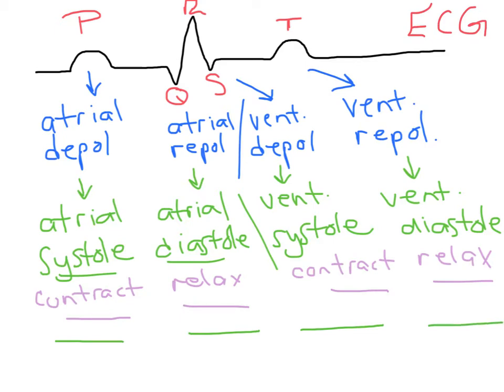So we have atrial systole and diastole, and then ventricular systole and diastole. These mechanical events occur due to muscle contraction — the cardiac muscle cells contracting — in response to an electrical event occurring in those cells.